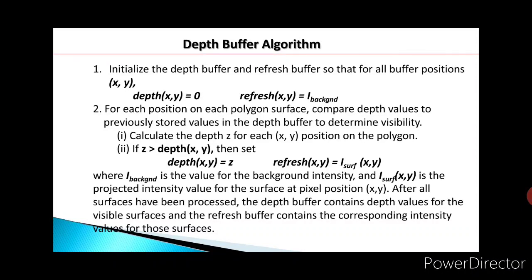We process polygon surfaces one by one. If there are n polygon surfaces in the picture, we apply the second step for every polygon surface — for the first polygon, then the second polygon, and so on. For a particular surface, we calculate the depth of each point on the surface and compare it with the previously calculated depth.